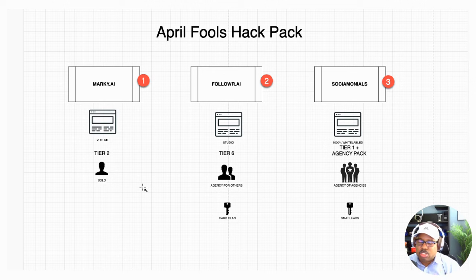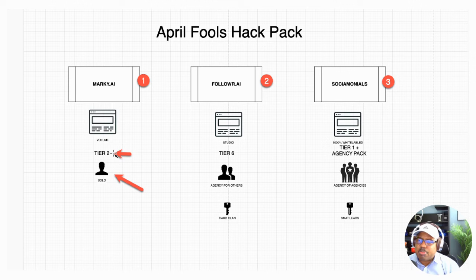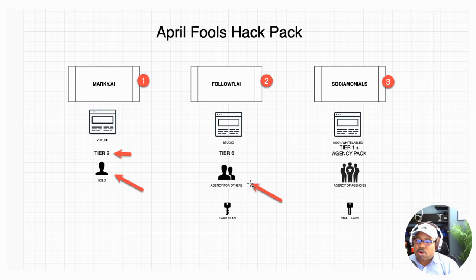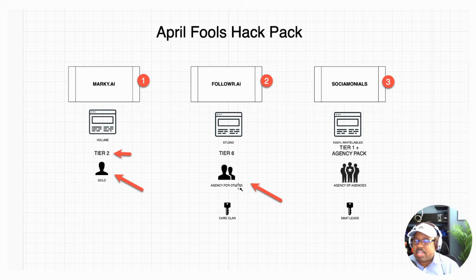If you're just a solopreneur going it alone, your best purchase would most likely be Marquee.ai at Tier 2. Tier 2 gives you about six different profiles you can use. If you're an agency working for other people — putting together marketing materials and filling up social media calendars — you'll want to go to Tier 6, which I think is around $174, and you get 100 profiles.